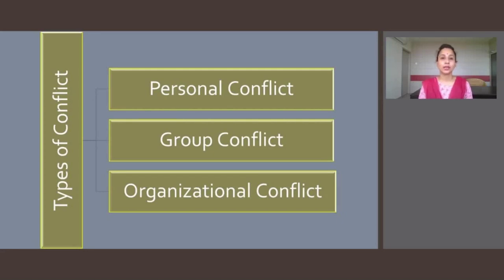Let us discuss intergroup conflict. Conflicts between teams and groups are termed intergroup conflicts. They result because of opposition, disagreement, and dispute between teams. Intergroup conflict includes disagreements within group members on a certain issue, which leads to ineffectiveness in the group's functioning.